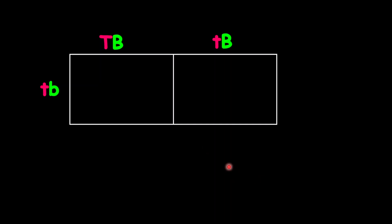To fill them out, row by column — those are the possible genotypes for the offspring. A point to note: you can always expand this in terms of making it 16.